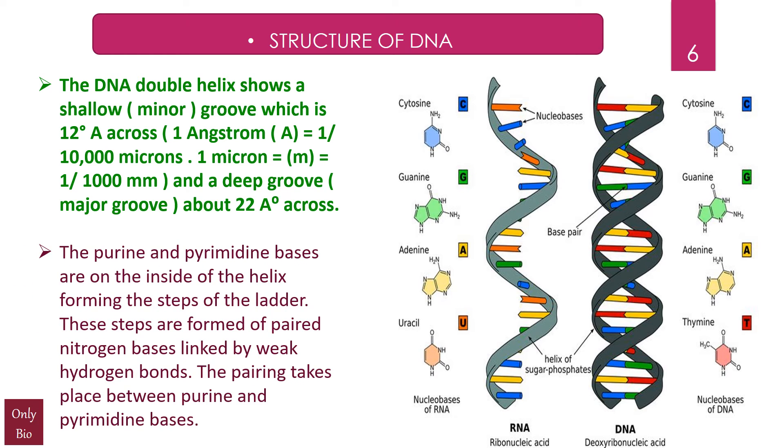The purine and pyrimidine bases are on the inside of the helix forming the steps of the ladder. These steps are formed of paired nitrogen bases linked by weak hydrogen bonds. The pairing takes place between purine and pyrimidine bases, friends. This means that on one strand, if there is a purine—say, for example, adenine—on the opposite side there would be thymine, which is a pyrimidine.